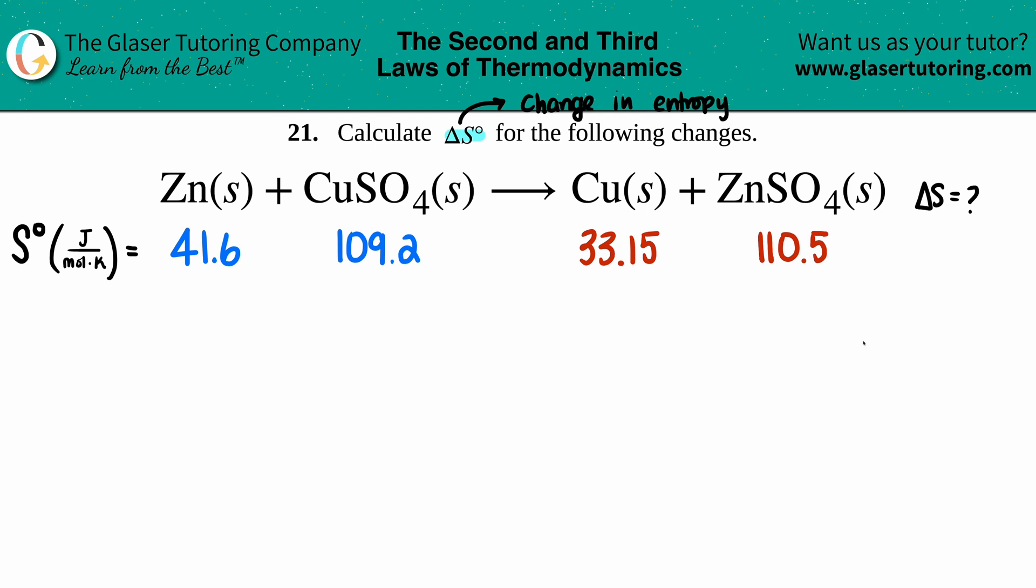Well, here comes the formula of this: your overall delta S of the whole reaction is always the sum - that's that little Greek symbol - the sum, aka adding everything up, the sum of all your products minus the sum of all your reactants.